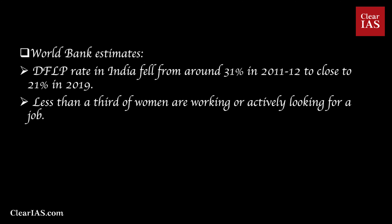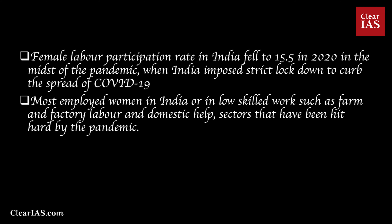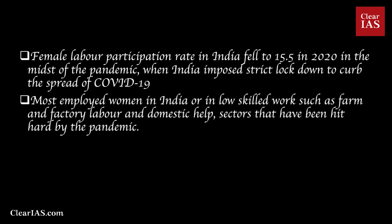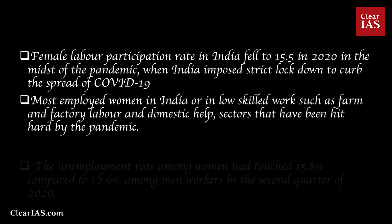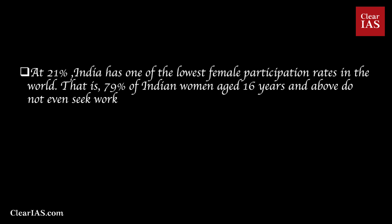The female labour force participation rate in India has been one of the lowest in the world. As per World Bank data, the female LFPR in India fell from around 31% in 2011–12 to close to 21% in 2019. This decline has been sharp in rural areas — less than a third of women are working or actively looking for a job. The female LFPR had fallen to 20.3% in 2019 from more than 26% in 2005. It further fell to 15.5% in 2020 when India imposed a strict lockdown due to COVID-19. Most employed women in India are in low-skilled work such as farm and factory labour and domestic help — sectors hit hard by the pandemic.